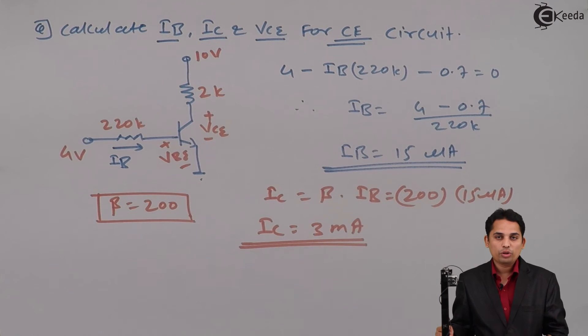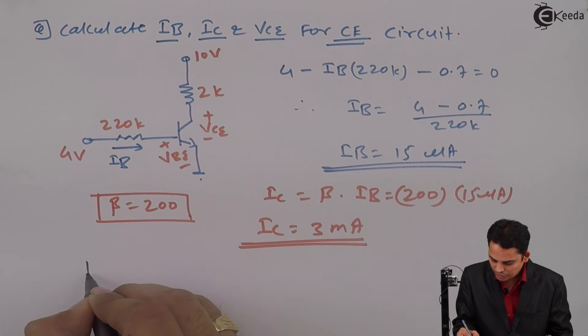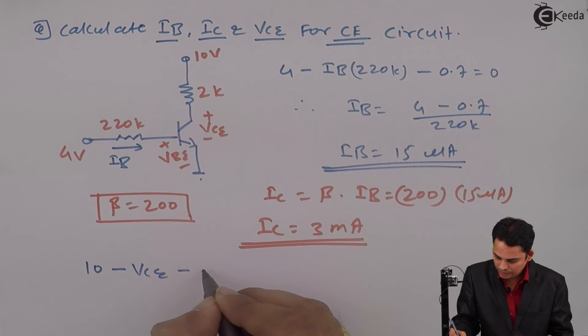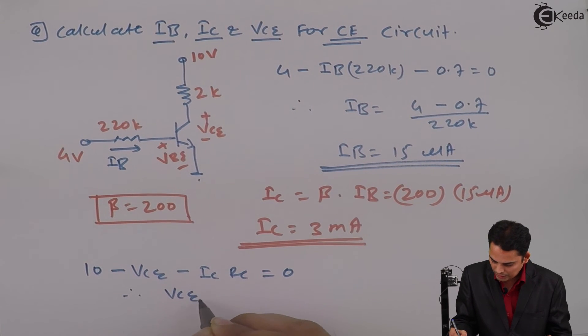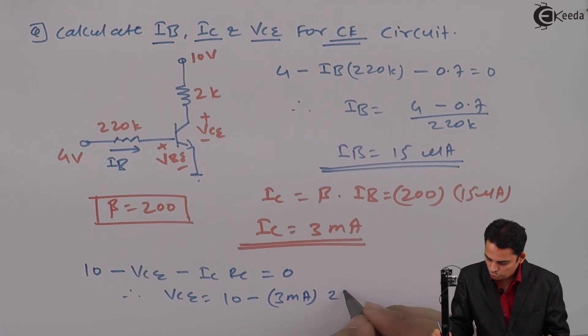Now in order to get VCE, apply KVL to the output. The equation will become VCC is 10 volts minus VCE. IC into RC equals 10 minus 3 milliamperes multiplied by 2 kilo-ohms.